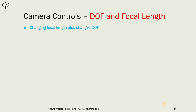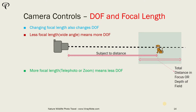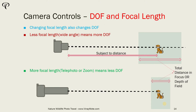Changing the focal length also changes the depth of field. Less focal length, which is kind of a wide angle lens, means more depth of field — so this is inversely proportional. If you are using a wide angle lens and keeping the subject distance the same, your depth of field is going to be more. If you're using a telephoto or zoom lens, then you're going to get less depth of field.